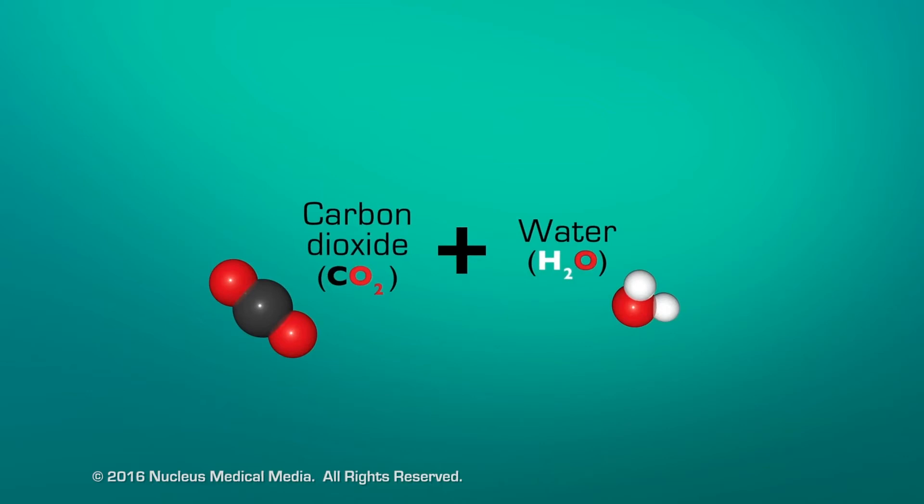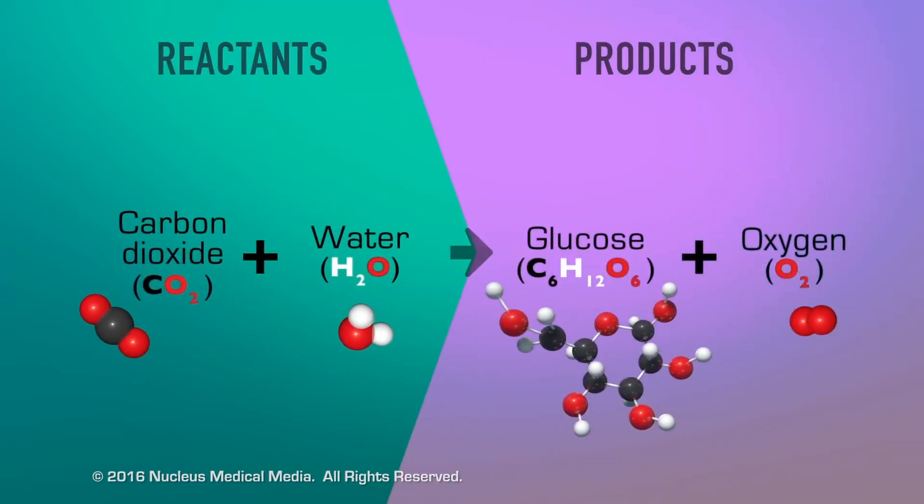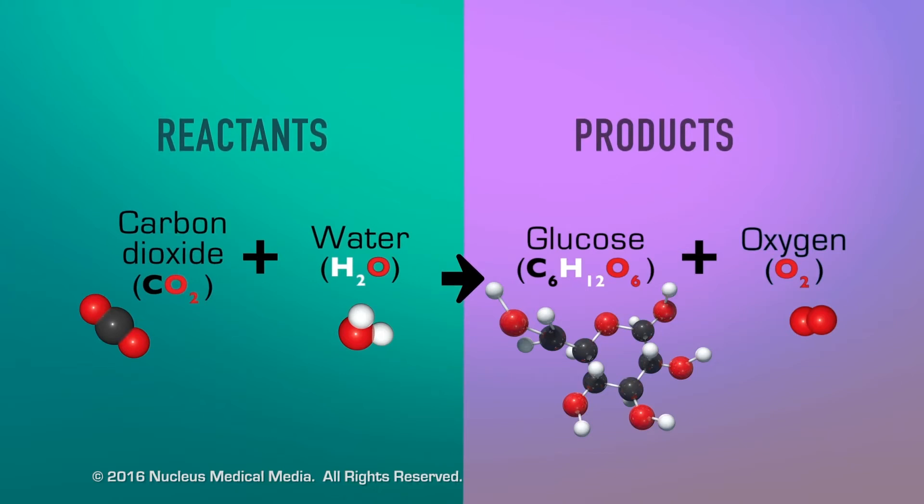In this reaction, carbon dioxide and water are called reactants because they're the substances changing by combining or reacting together. Glucose and oxygen are called products because they're the new substances produced by the reaction.